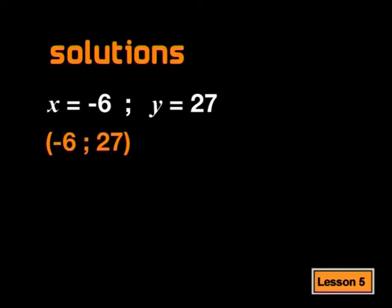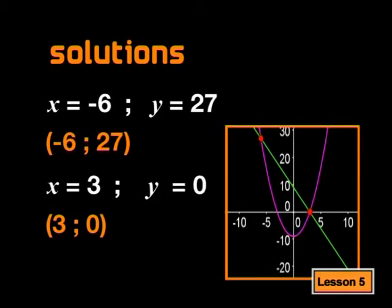Good. Now all you need to do is write down your answer. Okay. For the first solution, x equals negative 6 and y equals 27. For the second solution, x equals 3 and y equals 0. Very well done. Now that wasn't so hard, was it? Nope.